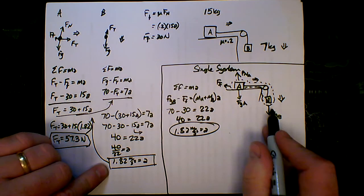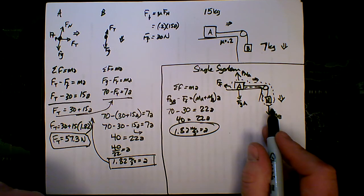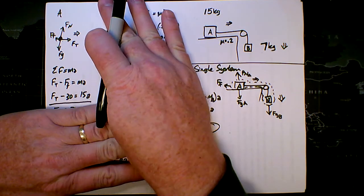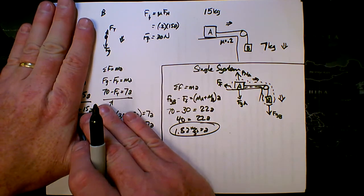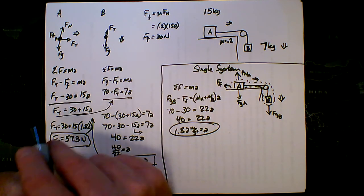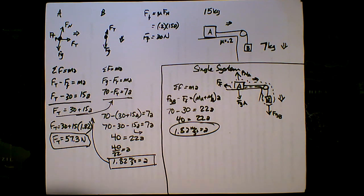Find the acceleration using the single system. Again, to find the tension, you would need to take this acceleration and then split off either A or B and plug this acceleration value in to the formula there and solve for the tension. And that is how you deal with a multi-object system that does involve friction.